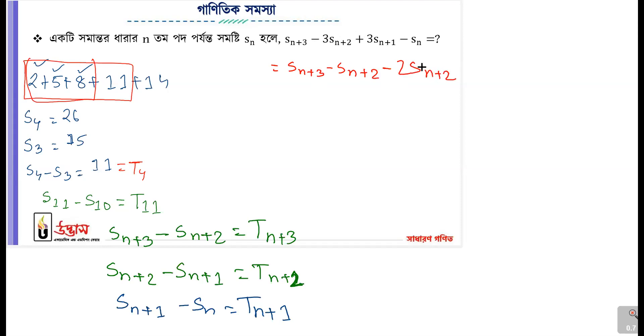S_{n+2} minus 2 S_{n+2}, but if S_{n+1} is there, then S_{n+1} is just manipulation. It's S_{n+3}, S_{n+2}, and then T_{n+3}.